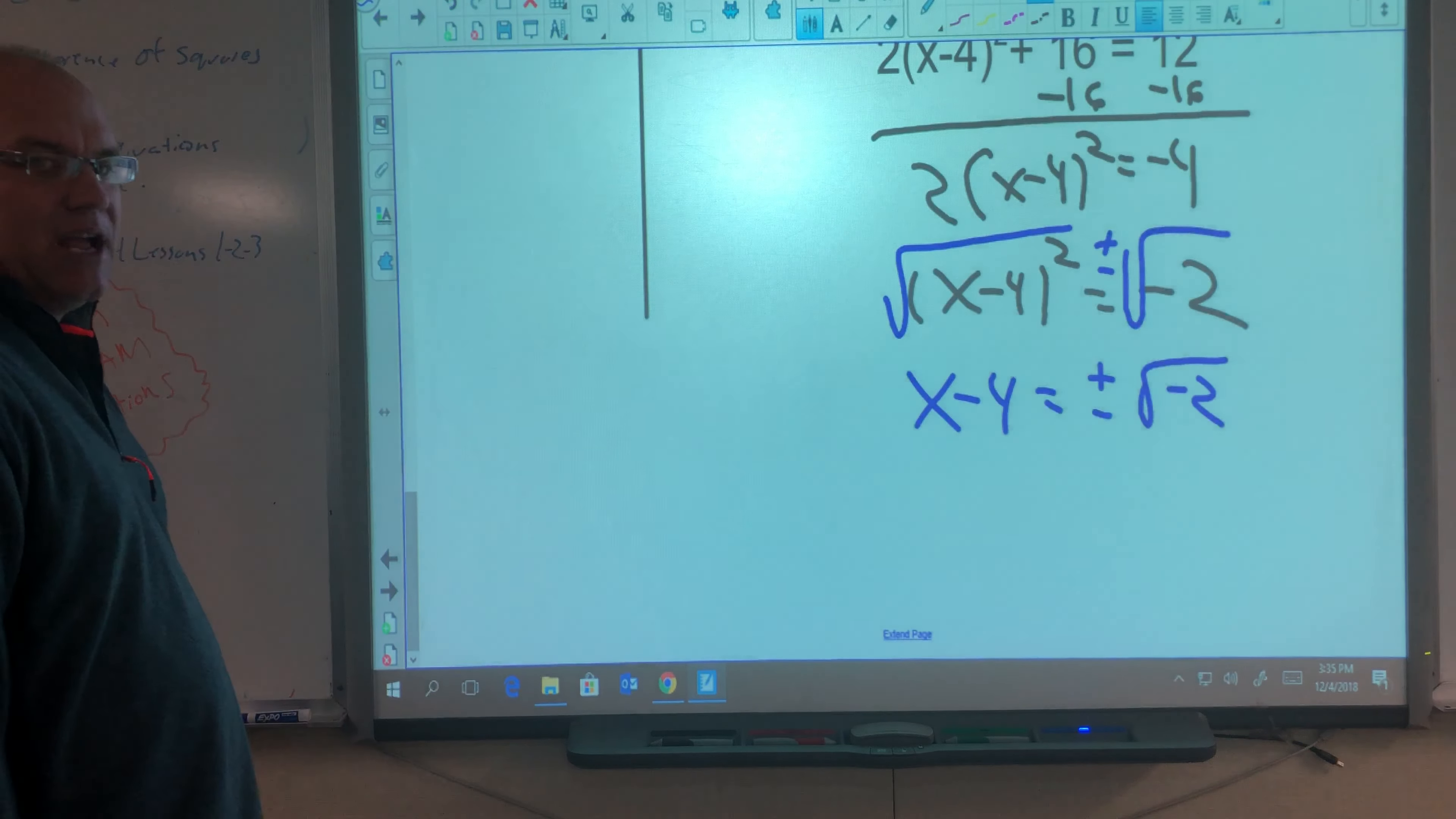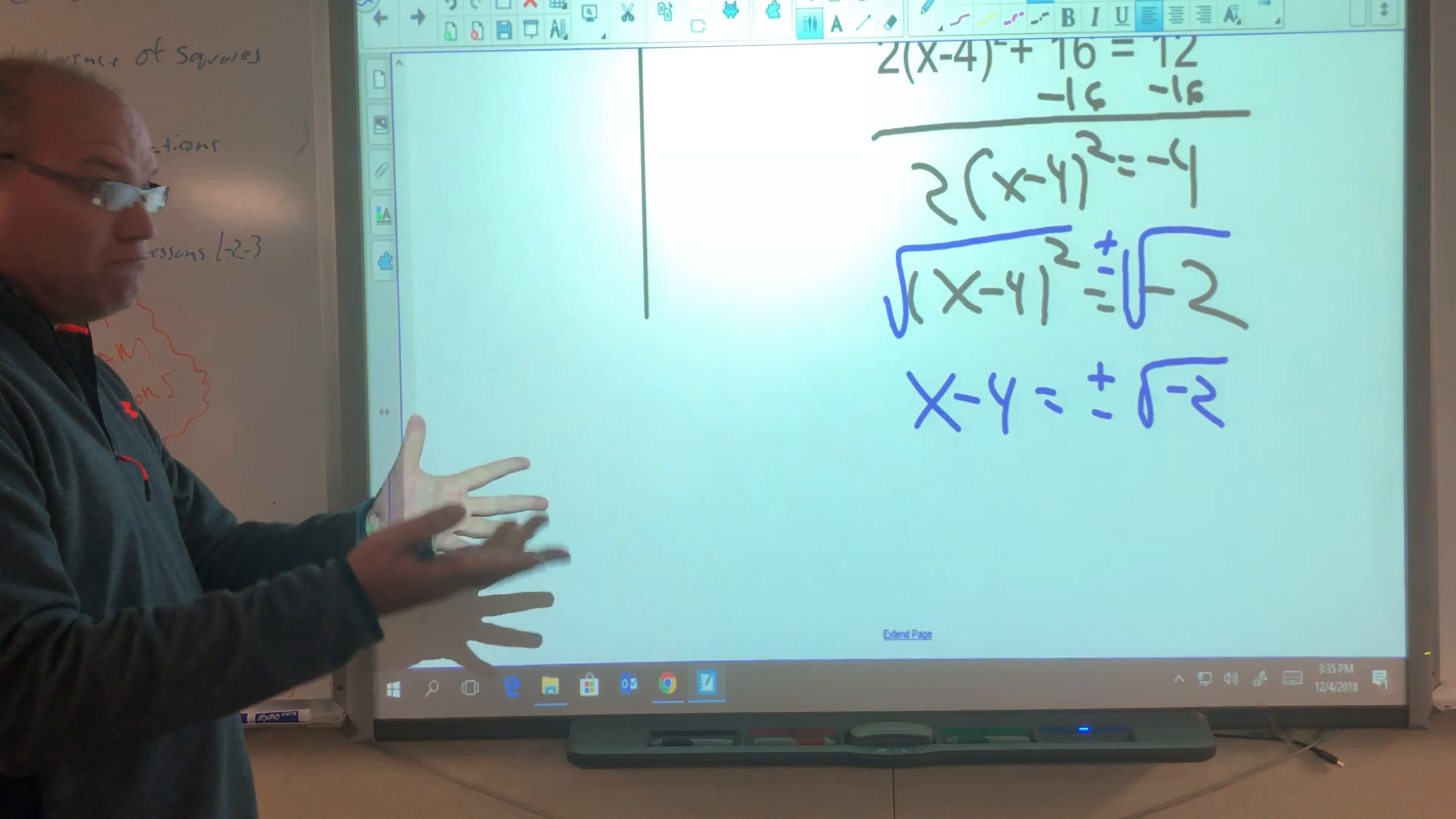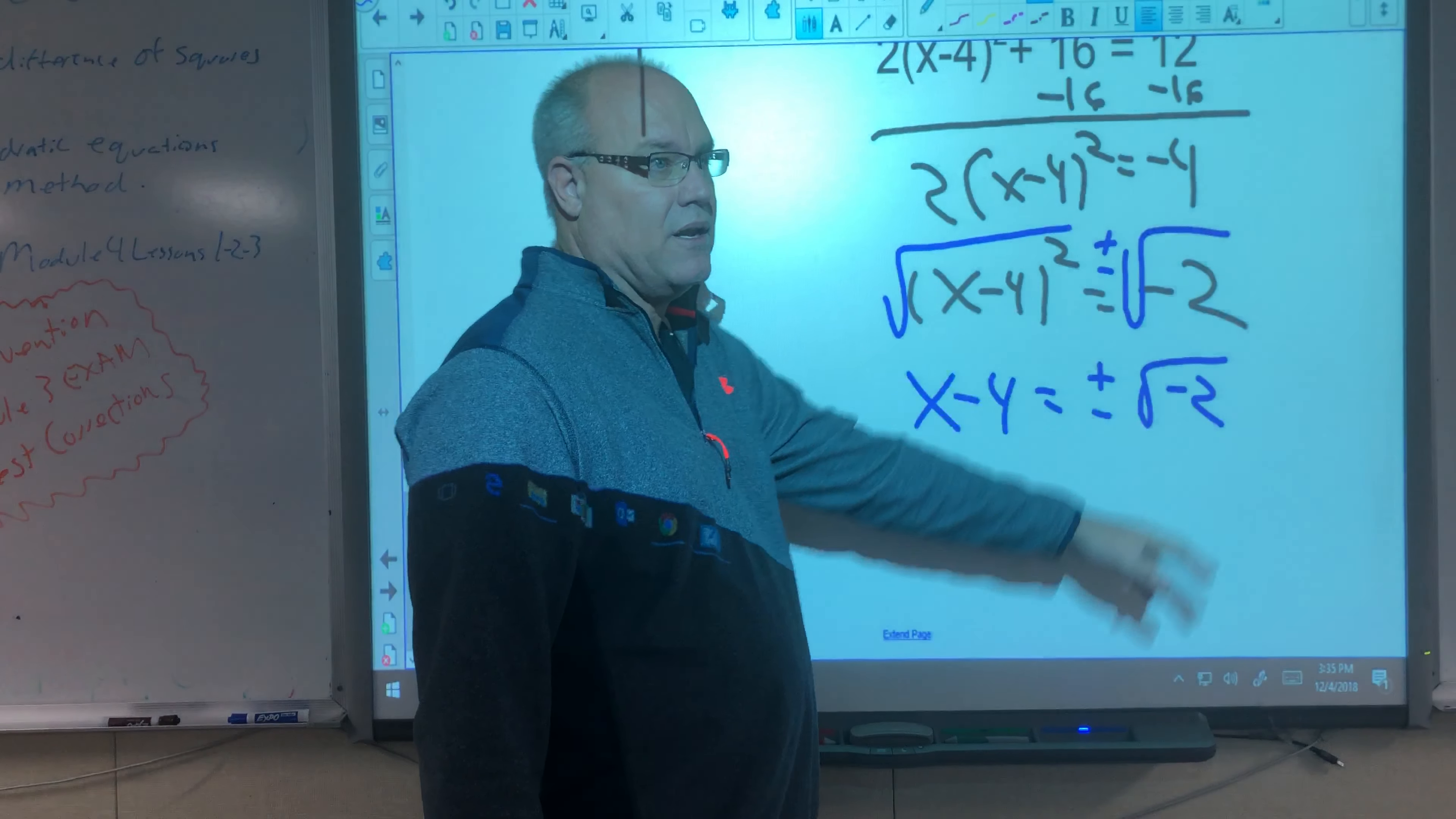We can't have a square root of a negative number. There's no number times itself that gives you a negative, right? Because negative times negative is positive. Positive times a positive is positive. So it's impossible to have a square root number being a negative.